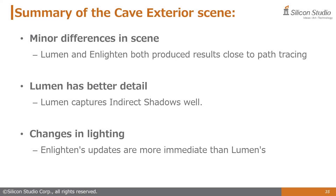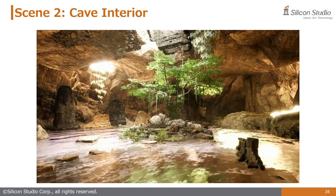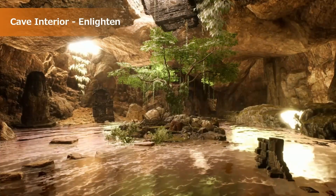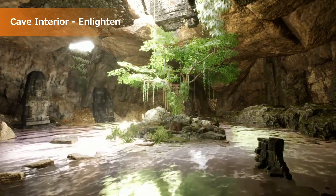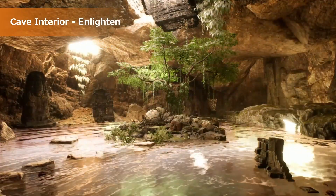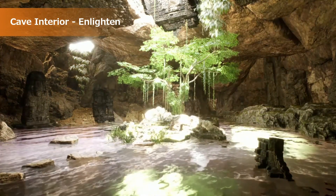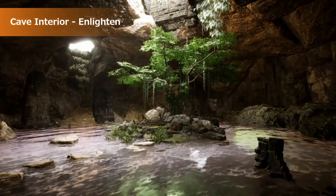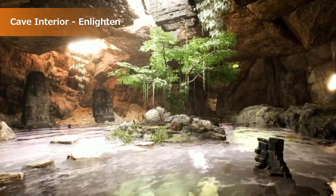In summary for the cave exterior scene: both Lumen and Enlighten produce results similar to path tracing, Lumen excels when rendering indirect shadows, and rapid changes in lighting are more immediate with Enlighten. The second scene is an interior cave location featuring a large tree on a small center island. With Enlighten, the indirect lighting is updated almost without delay in response to light source movement. When the central tree is directly illuminated, the surrounding rocks show a slight greenish tint due to reflection, achieving a natural representation of indirect lighting.